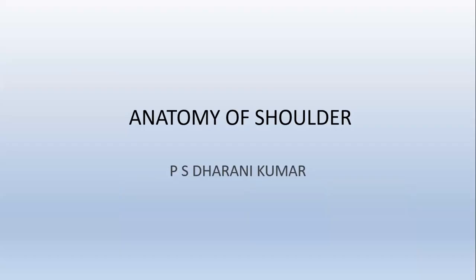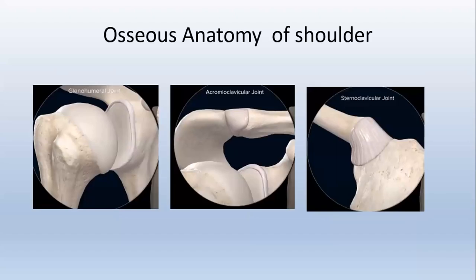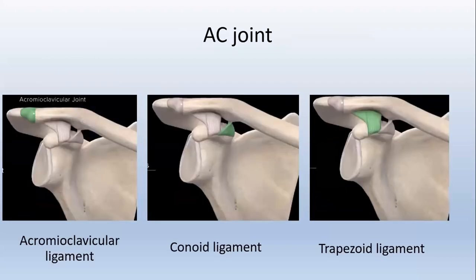Today's topic for discussion is anatomy of the shoulder joint. The shoulder joint is composed of three specific joints: the glenohumeral joint, acromioclavicular joint, and the sternoclavicular joint. The acromioclavicular joint is stabilized by the acromioclavicular ligament and two coracoclavicular ligaments — the conoid ligament, which is medial, and the trapezoid, which is lateral.